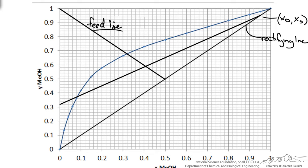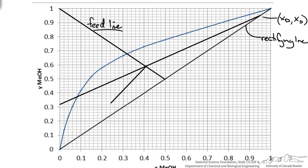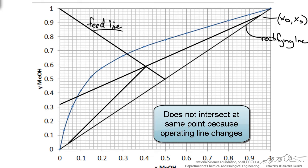Now the last thing is to determine our stripping line. The thing about the stripping line is in the past we have drawn from the intersection down to the x equals y line. However, since we do not have a partial reboiler that is not the case, and I will show you here in a second.